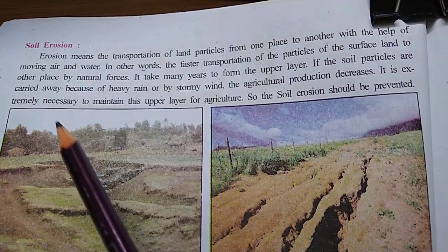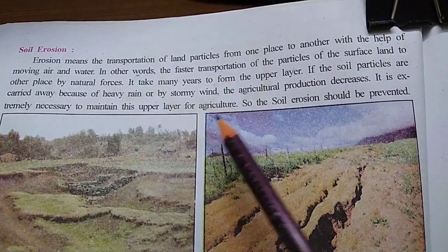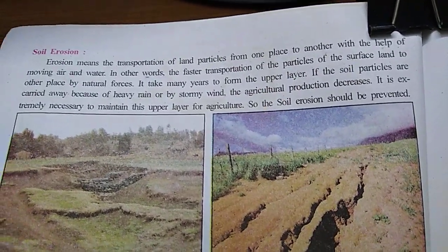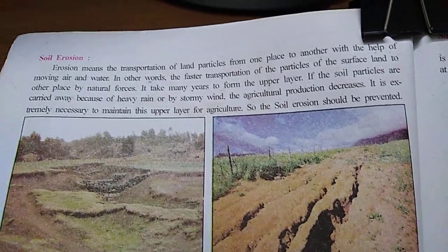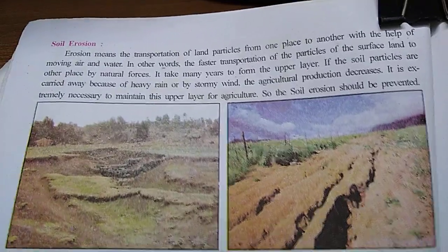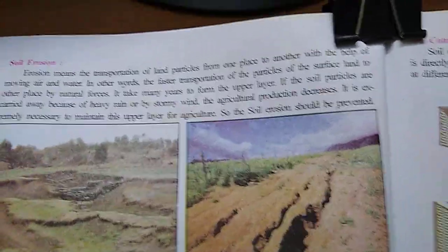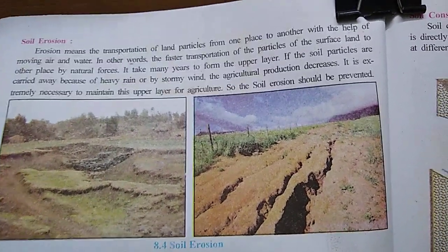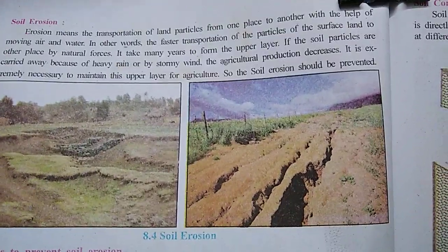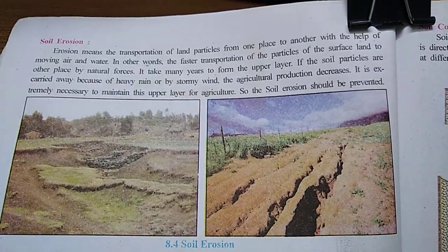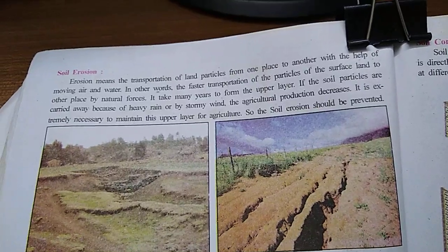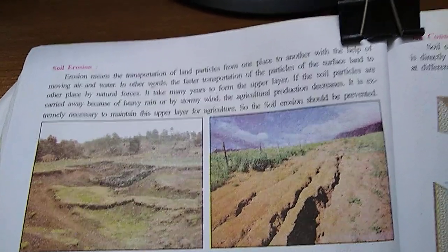It is extremely necessary to maintain the upper layer for agriculture. You should stop this kind of erosion so that the uppermost layer of soil remains as it is for agricultural activity. Soil erosion should be prevented. This can be asked in exams — explain soil erosion and the measures to prevent soil erosion.